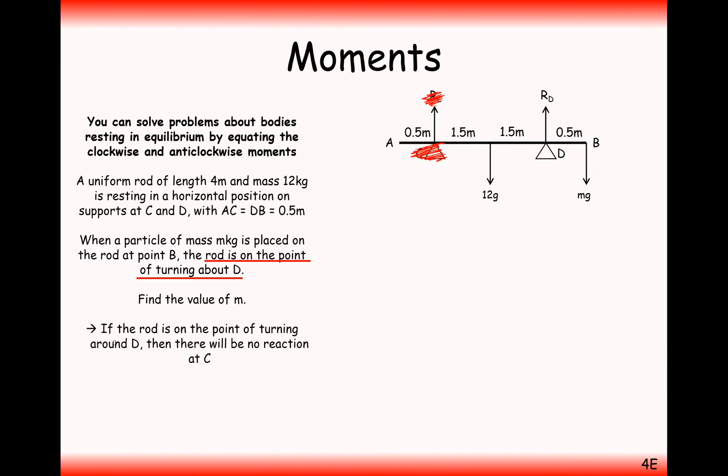If the rod is on the turning point around D, then there is no reaction force at C. The rod is barely in contact with the support at C, about to move upwards as it rotates around D. What we can effectively say then is that there is no reaction force at C, and there is no pivot at C, or the pivot is useless.